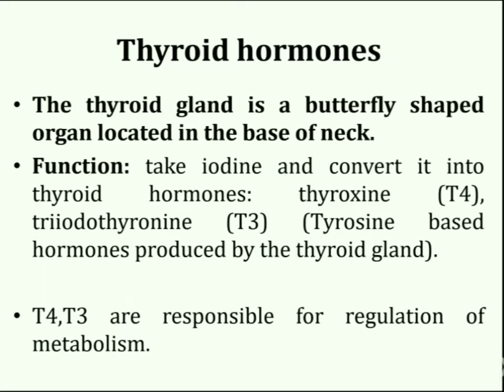The condition of excess thyroid hormone is known as hyperthyroidism. Thyroid disorders include goiter, which is enlargement of the thyroid gland; hyperthyroidism, when your thyroid gland makes more thyroid hormones than your body needs; hypothyroidism, when your thyroid gland does not make enough thyroid hormones; thyroid cancer; and thyroid nodules, which are lumps in the thyroid gland, among several other disorders.